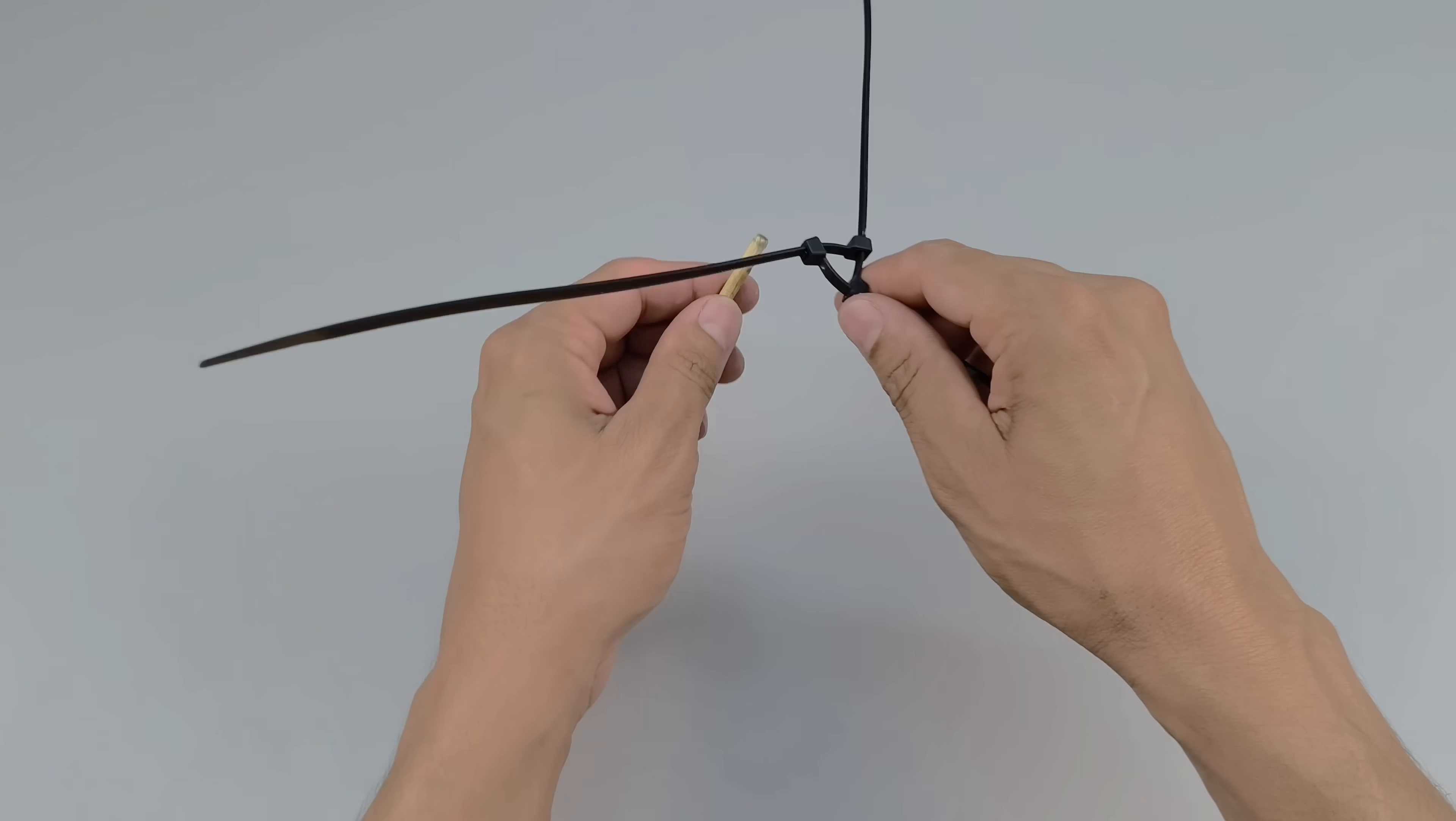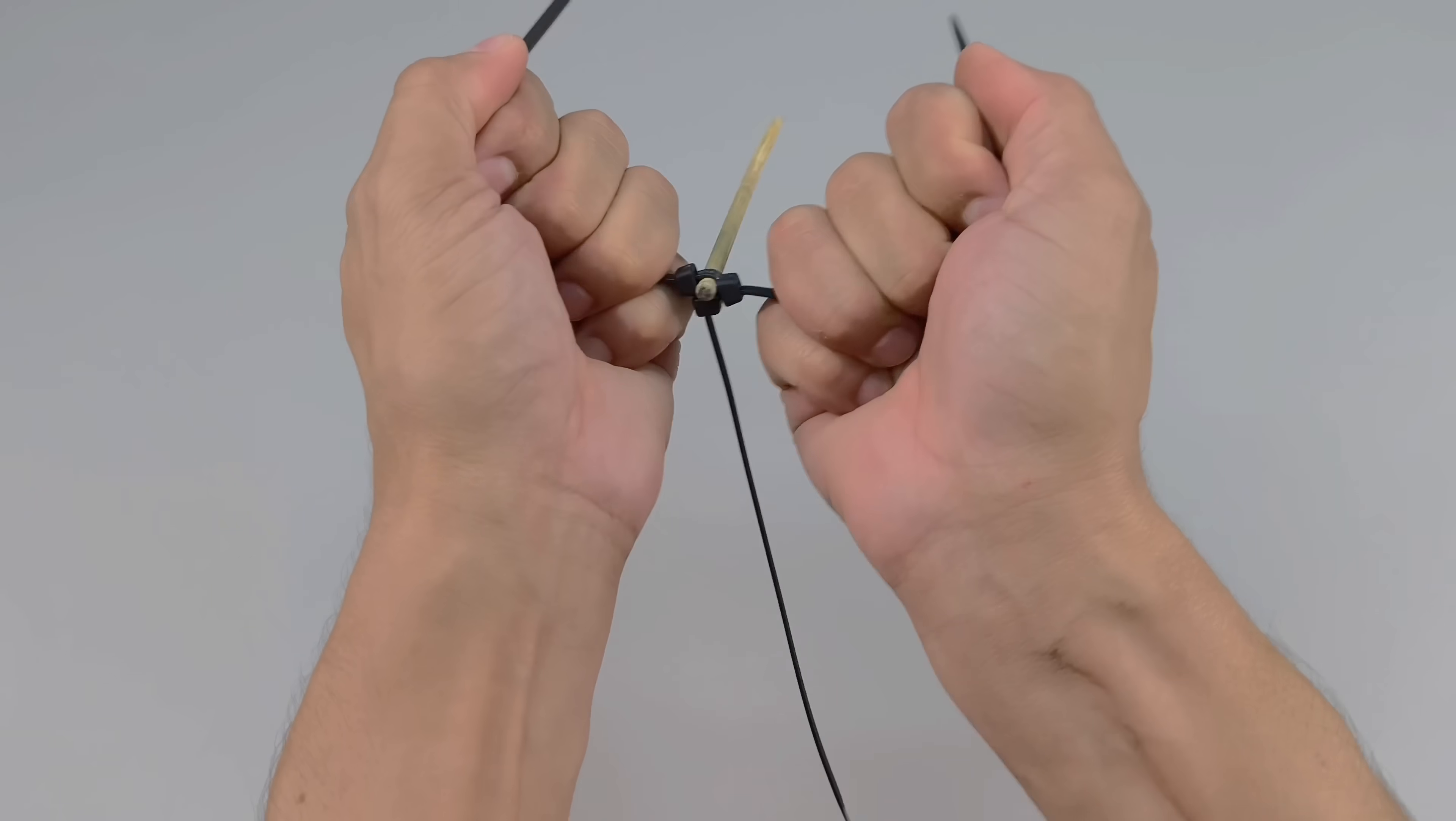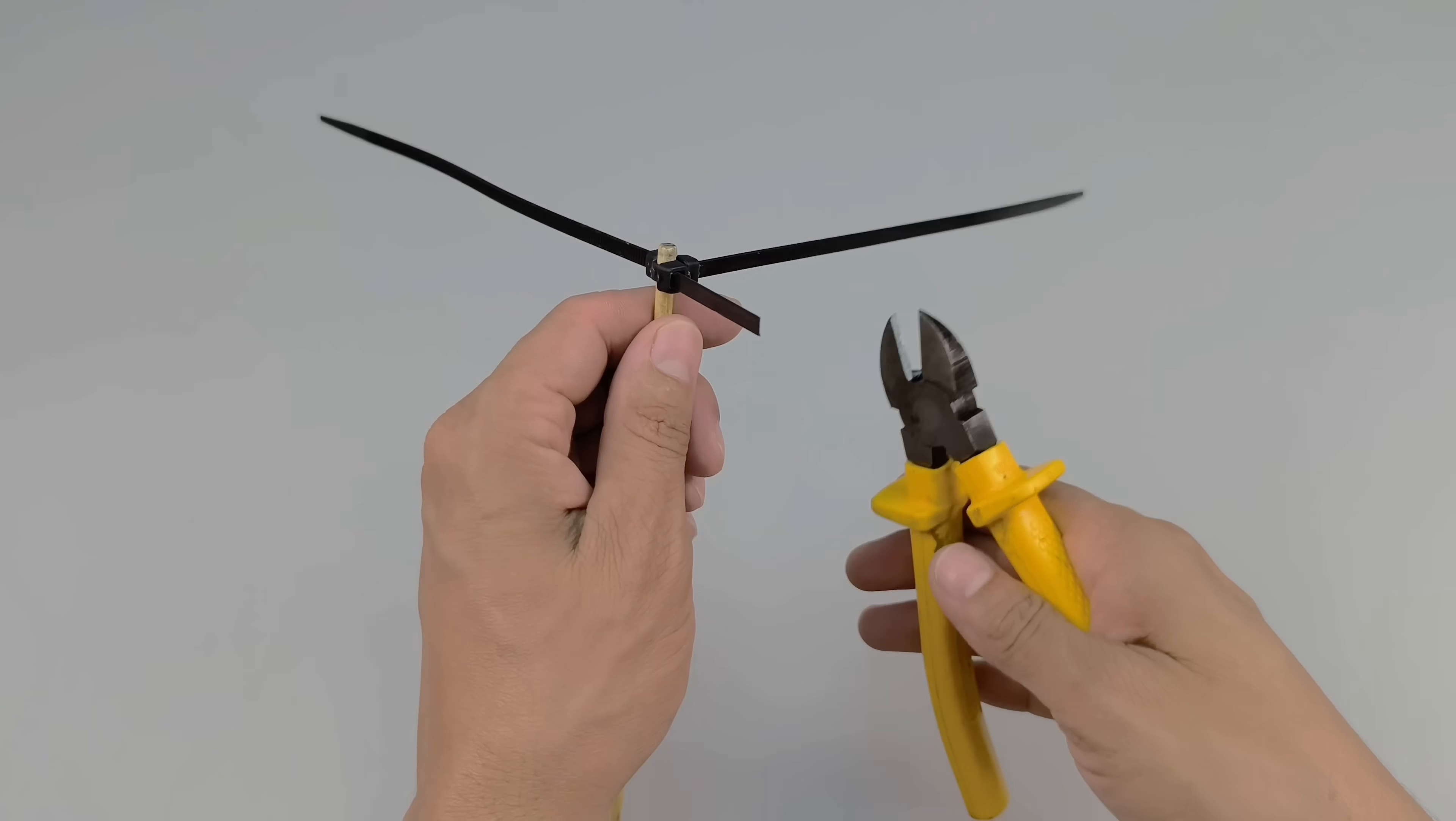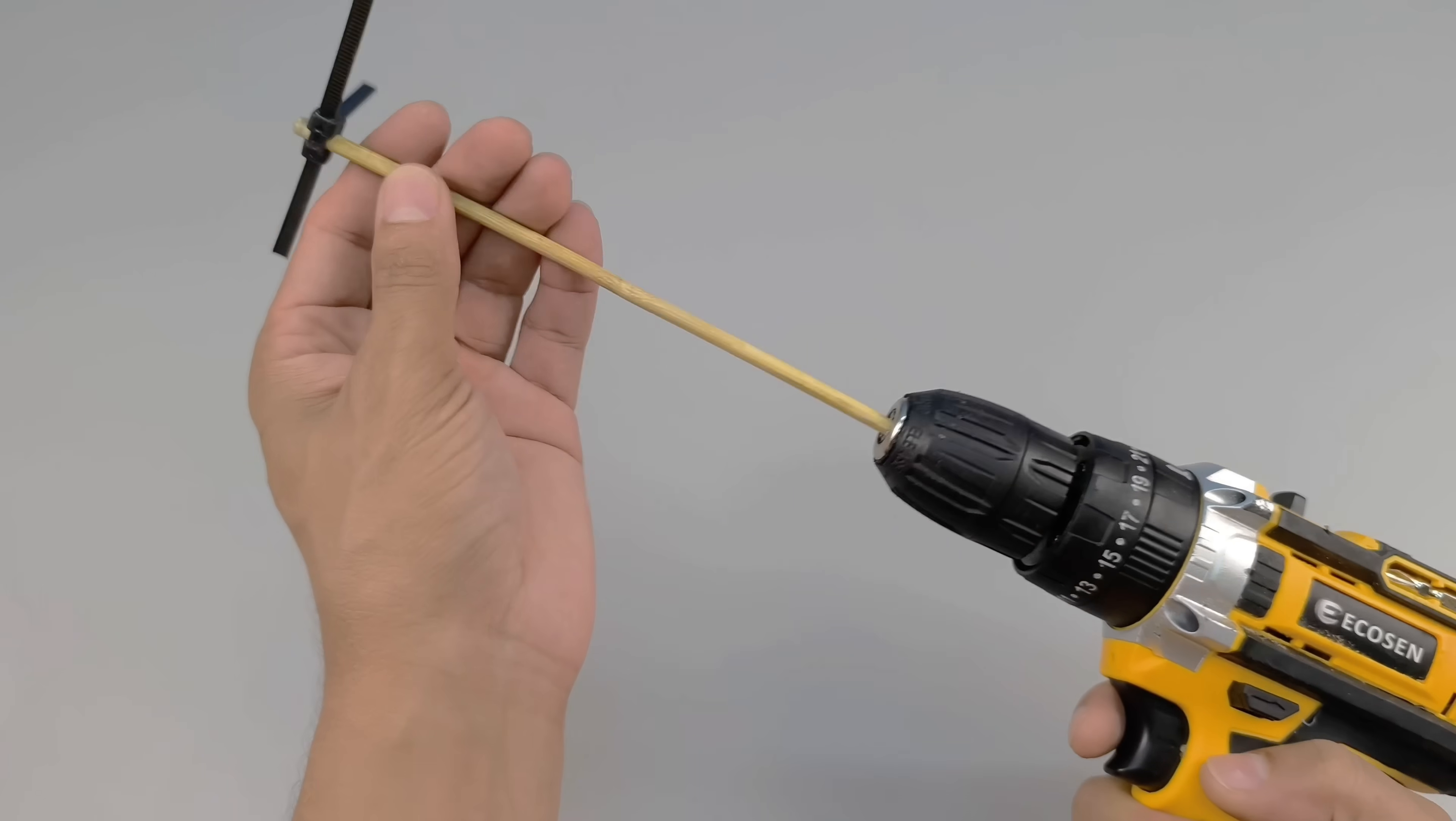You'll need three nylon cable ties, also known as zip ties, and a thin wooden or metal stick. Attach the cable ties to the end of the stick so that they're spaced apart, like the blades of a propeller. This small, improvised device will function as a mixer, attached to the tip of a standard drill.